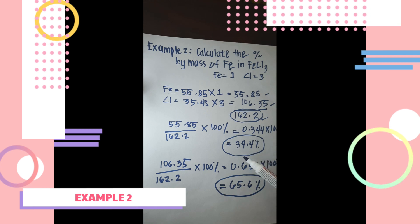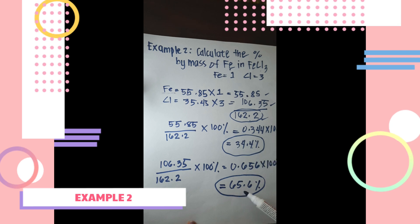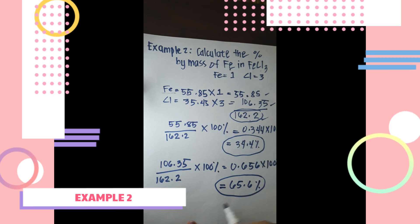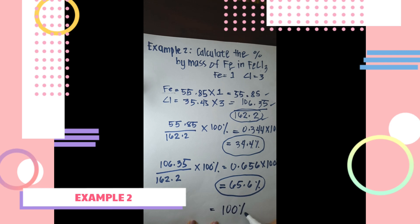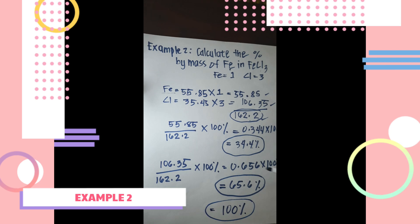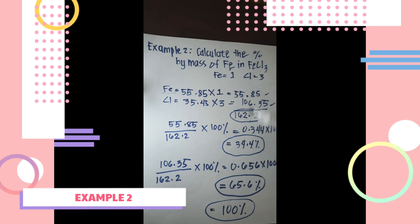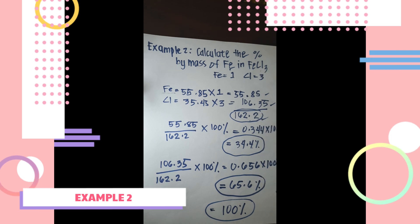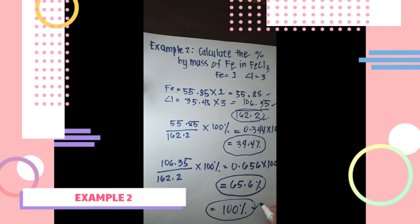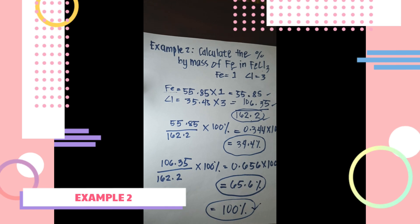If we add 34.4 percent and 65.6 percent, we get 100 percent. By adding the percentage by mass of each element in a compound, if we get 100 percent, we can confirm that our computation is correct.